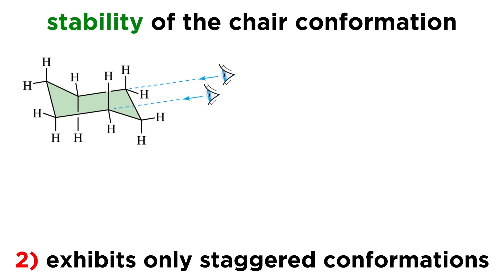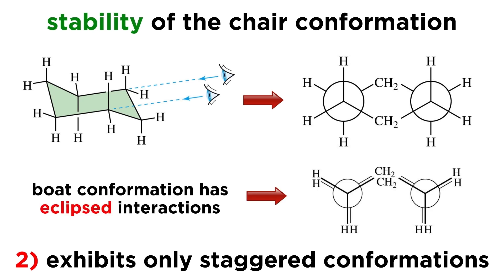The second reason that contributes to this being the lowest energy conformation is that if we were to draw a Newman projection for any of these bonds, we would find only staggered conformations everywhere on the molecule, as opposed to other conformations which offer the possibility of some eclipsed interactions.